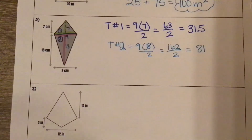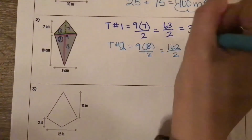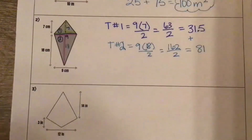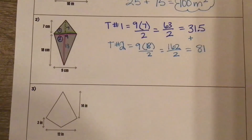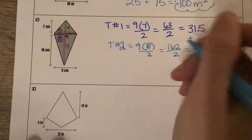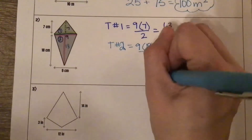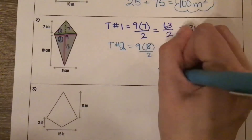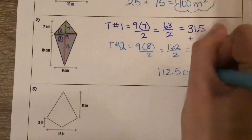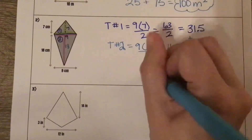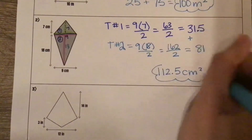And then our total area — we are going to add these two together. 31.5 plus 81 is 112.5 centimeters squared.